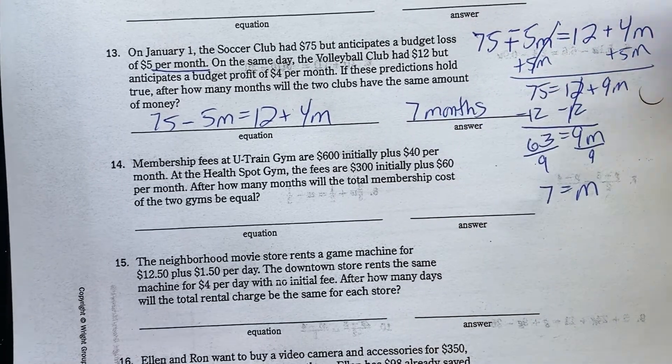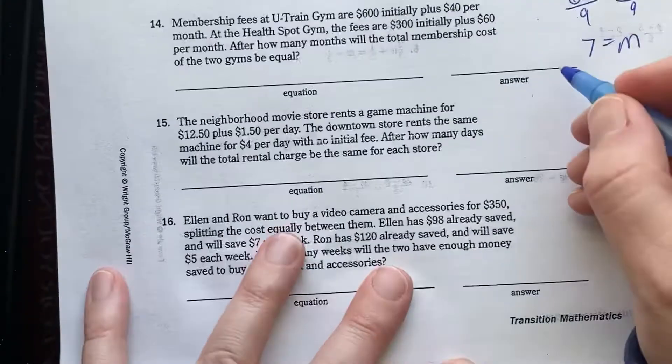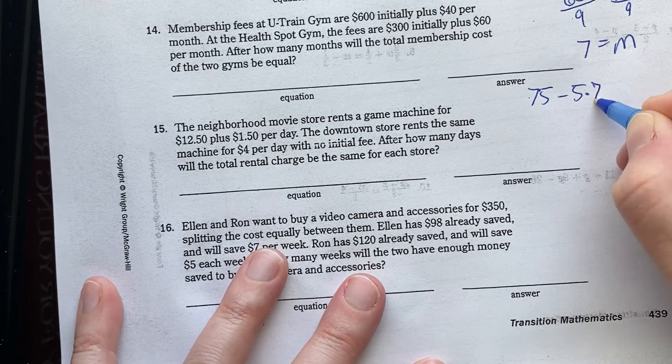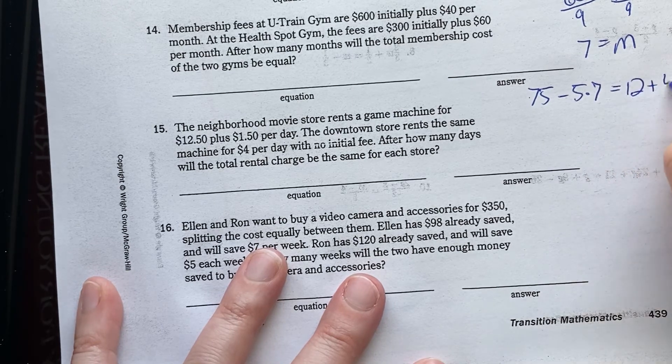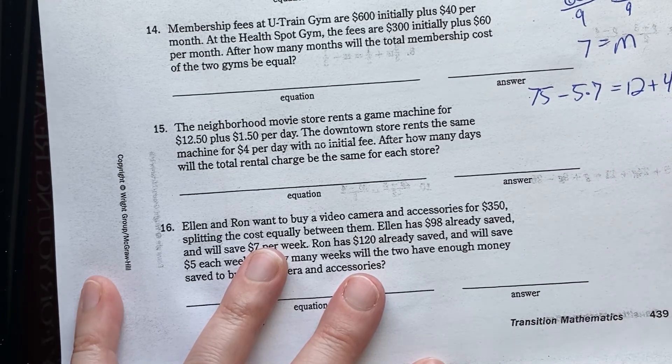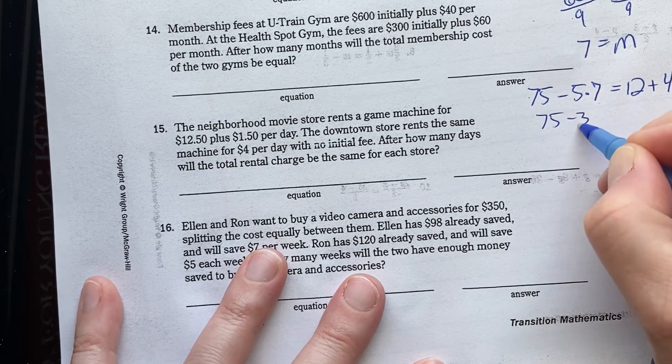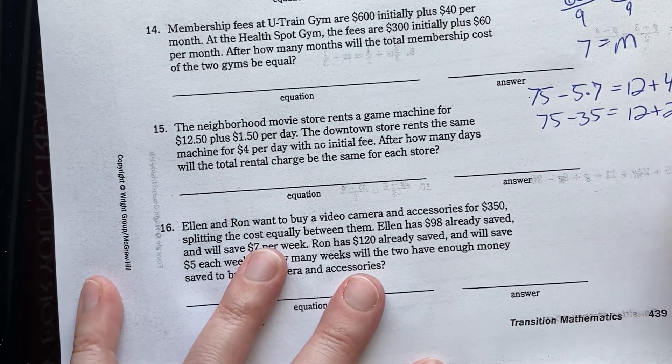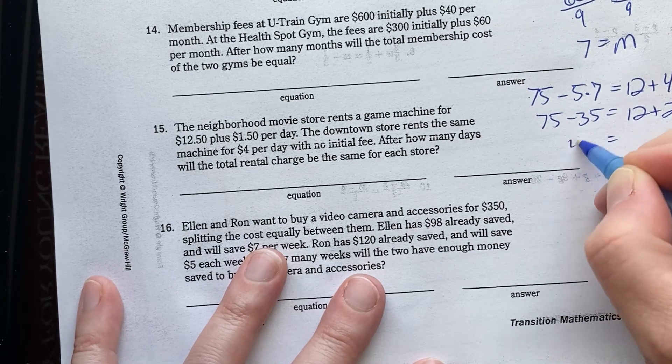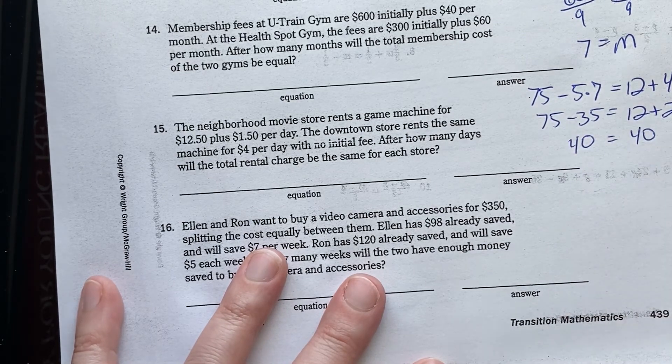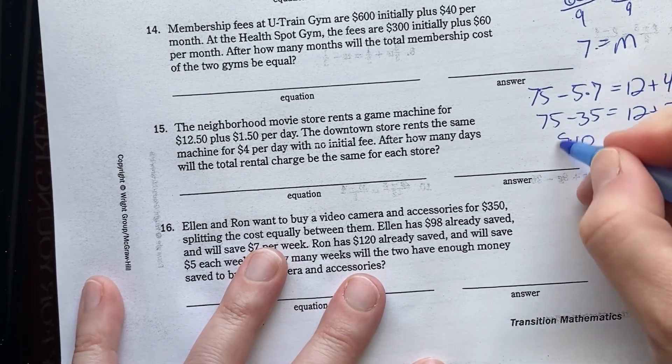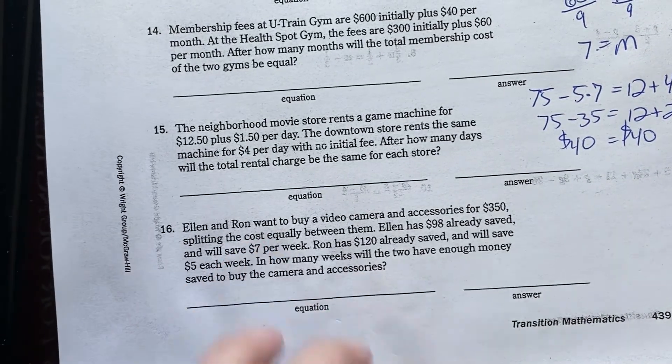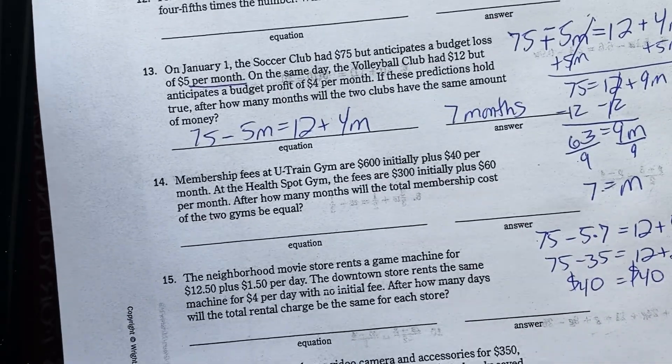So, the equation I wrote was 75 minus 5M equals 12 plus 4M. I solved it after seven months. So, if you substitute that back in here, you end up getting 75 minus 5 times 7 equals 12 plus 4 times 7. That's month seven. 75 minus 35 should equal 12 plus 28. This is going to be $40, and this will be $40. So, at month seven, they will both have $40. That's what that proves. We'll talk more about what all that means mathematically later.